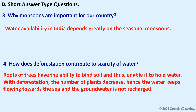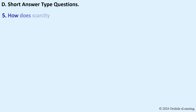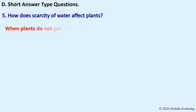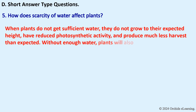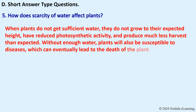How does scarcity of water affect plants? When plants do not get sufficient water, they do not grow to their expected height, have reduced photosynthetic activity, and produce much less harvest than expected. Without enough water, plants are also more susceptible to diseases, which can eventually lead to the death of the plant.